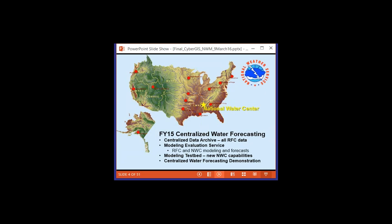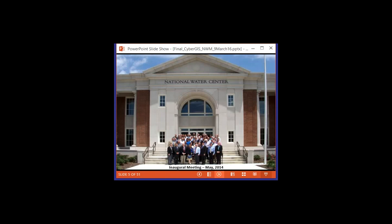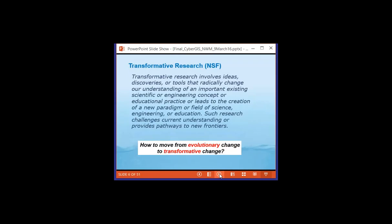The National Water Center has become established in Tuscaloosa and everything is being centralized there, so instead of 12 regional centers in the continental US and one in Alaska, there will be a single national center — like the National Hurricane Center but dealing with flooding and water information. There was a meeting at the National Water Center in May 2014 where I suggested this project would be judged as transformative research — involving ideas, discoveries, or tools that radically change understanding or create a new paradigm.